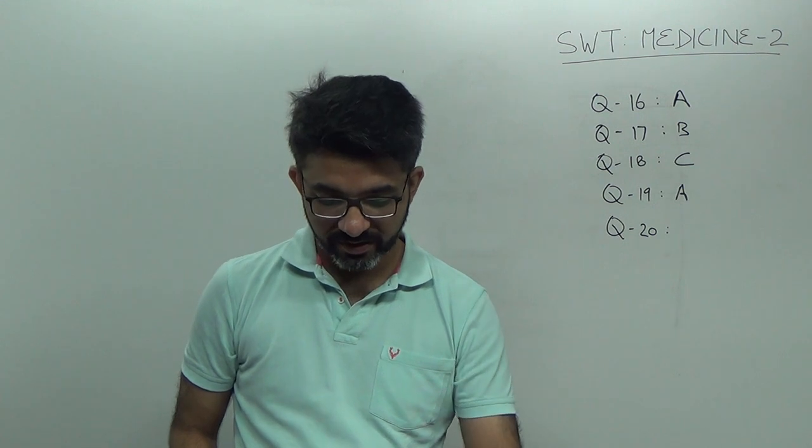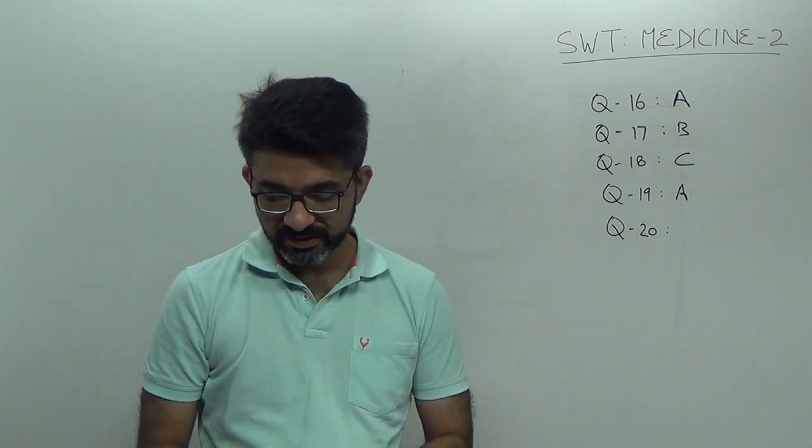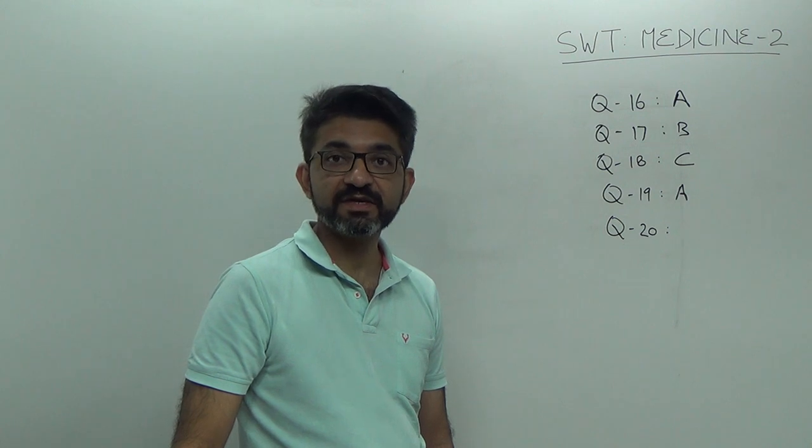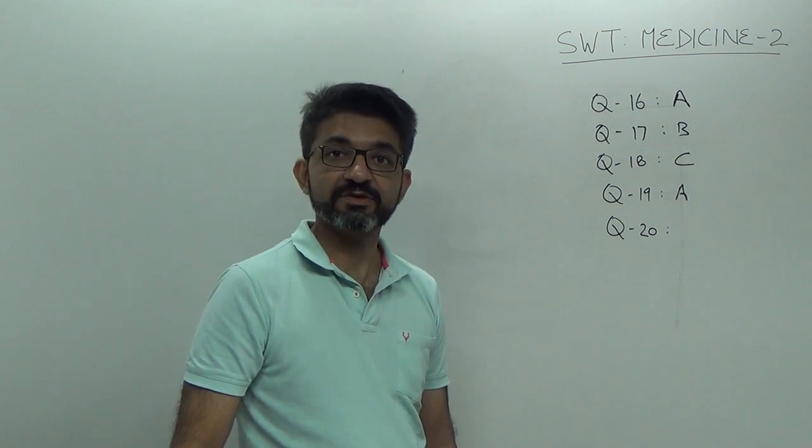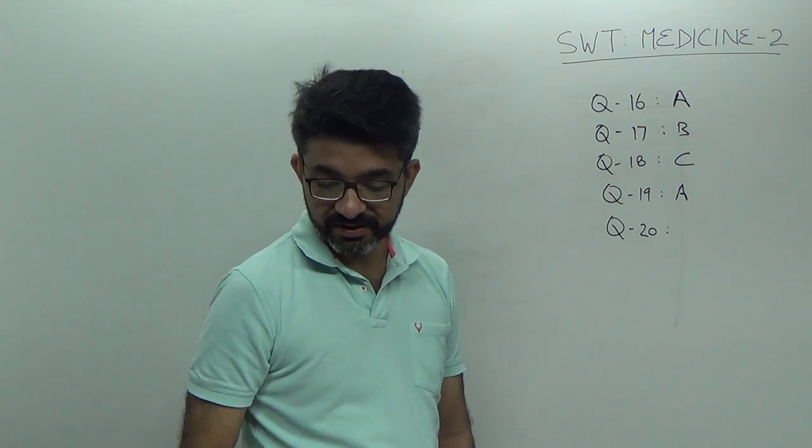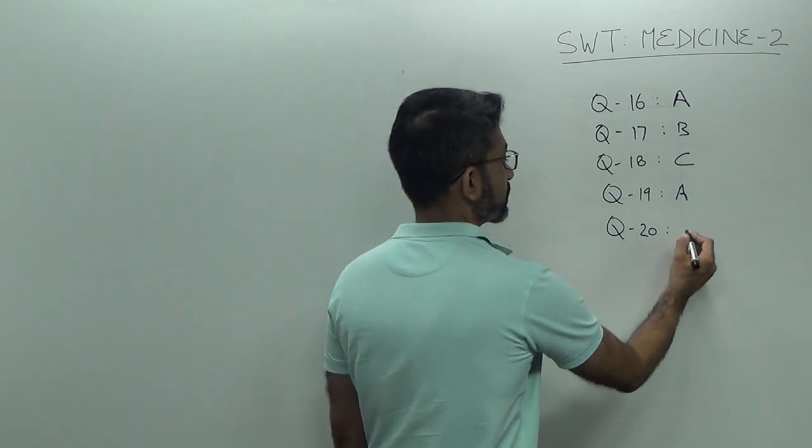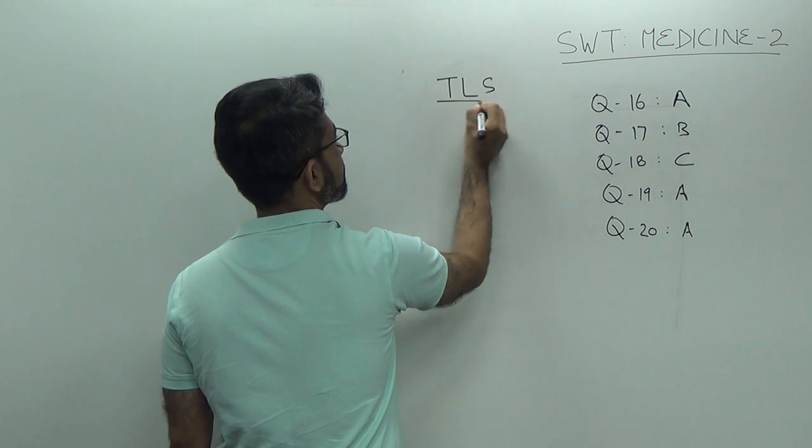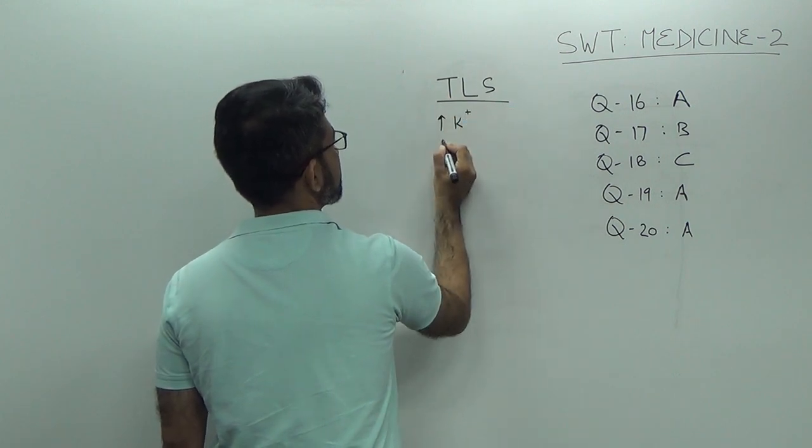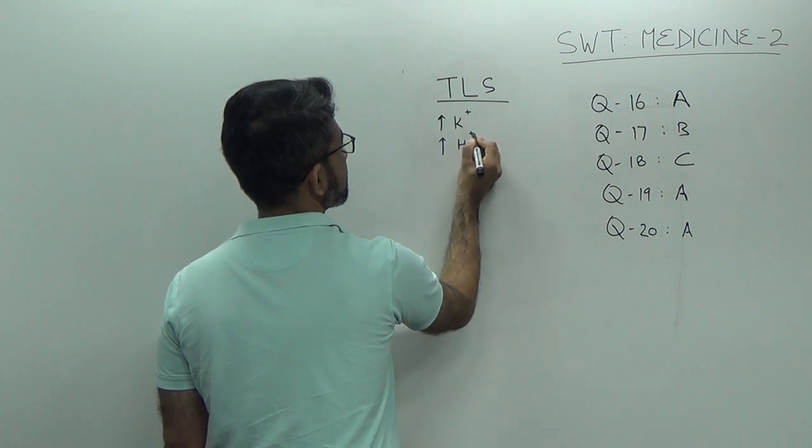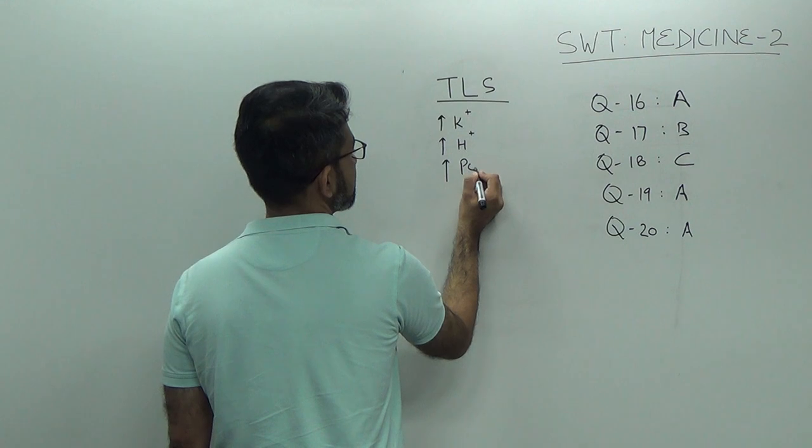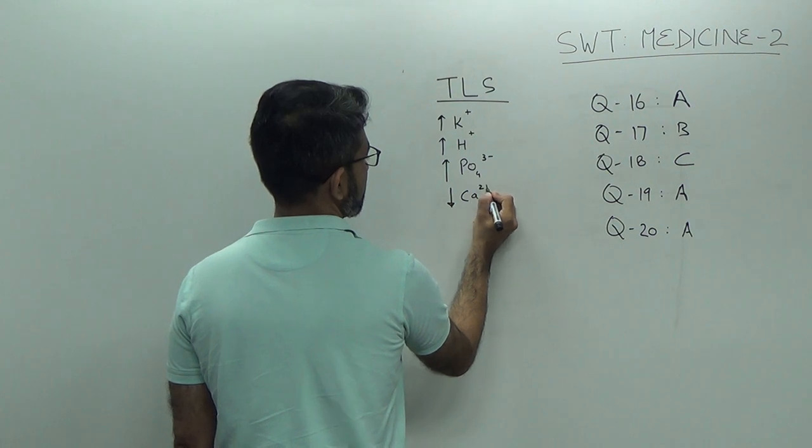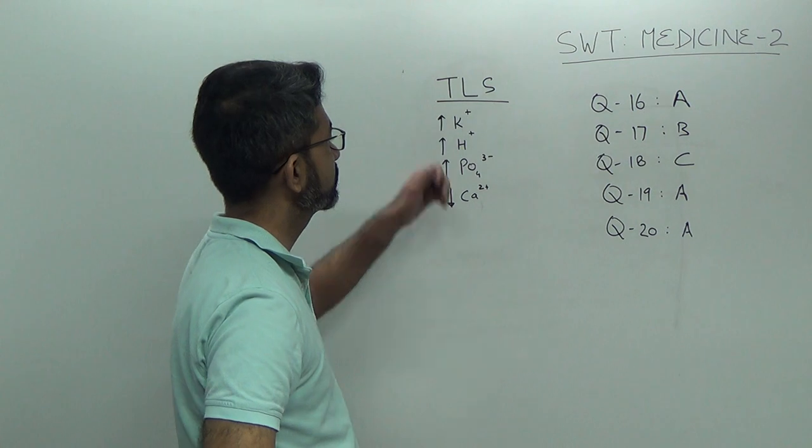Features of tumor lysis syndrome. See, tumor lysis syndrome causes hypokalcemia, causes hyperphosphatemia, causes hypocalcemia and there is acidosis. So, the only answer which is correct is hypokalcemia. Remember, tumor lysis syndrome, increase in potassium, increase in H ions, increase in phosphorus, decrease in calcium. All right? This is tumor lysis syndrome.